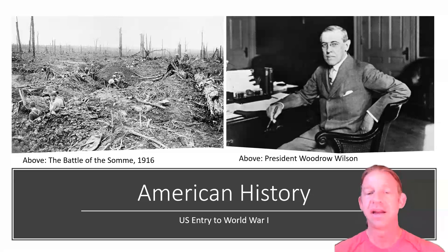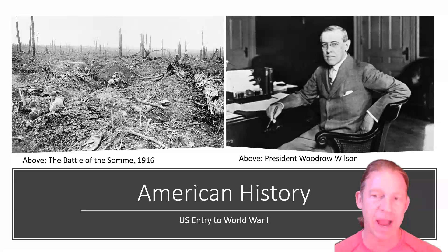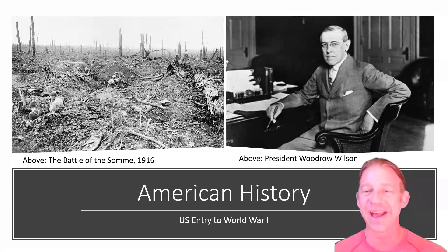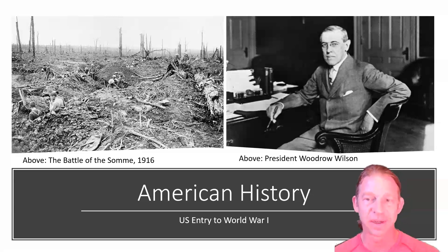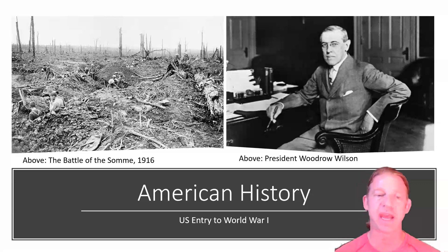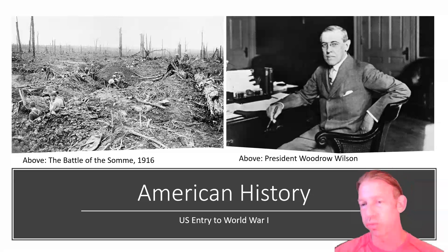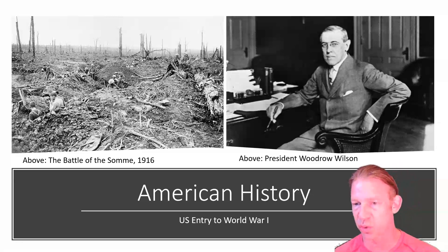Wilson's 14 points were designed to make the world safer for the United States and American-style Western democratic governance. He advocated freedom of the seas, free trade, and self-determination — though he did not really apply that to people of the colonized developing world. He proposed the League of Nations, which became a precedent for the eventual formation of the United Nations. But the United States never signed the Treaty of Versailles and never joined the League of Nations.